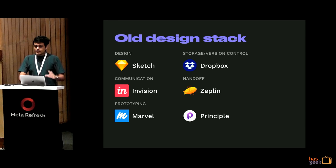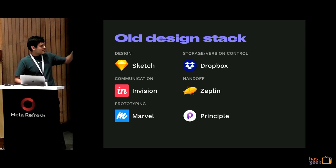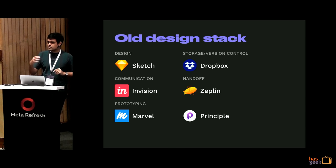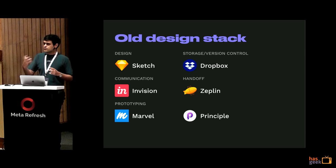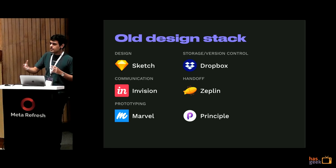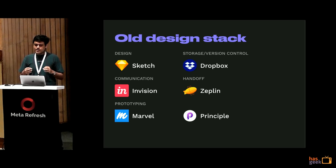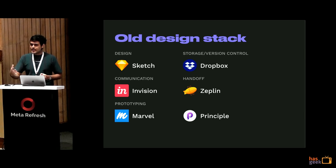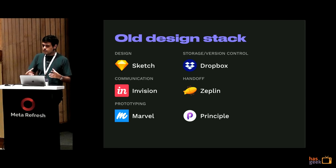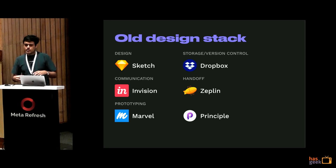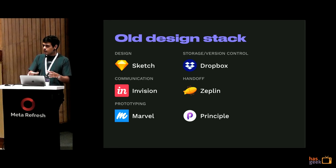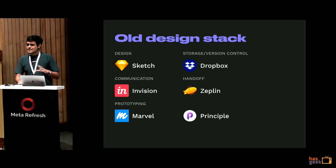If you're in a tech company right now, there's about a 95% chance this is your design stack or some variation. For design you use Sketch; for storage and version control, Dropbox, GitHub, or Abstract; for communication, Slack and InVision. Handoff typically happens in Zeppelin, and prototyping in Marvel or InVision. Complex prototypes happen in Principle or Framer. This was our design stack at Unacademy about six months back.